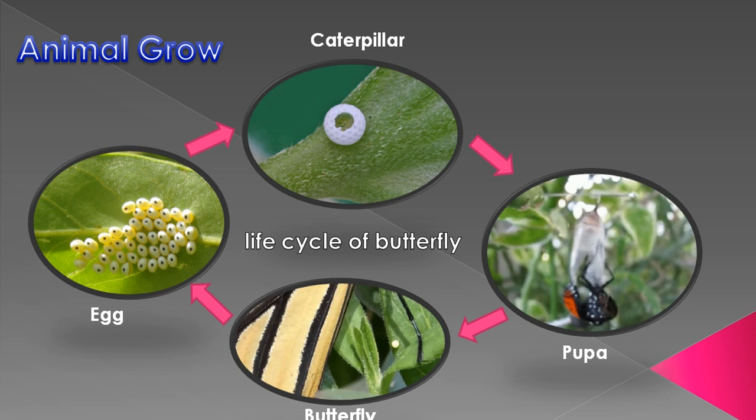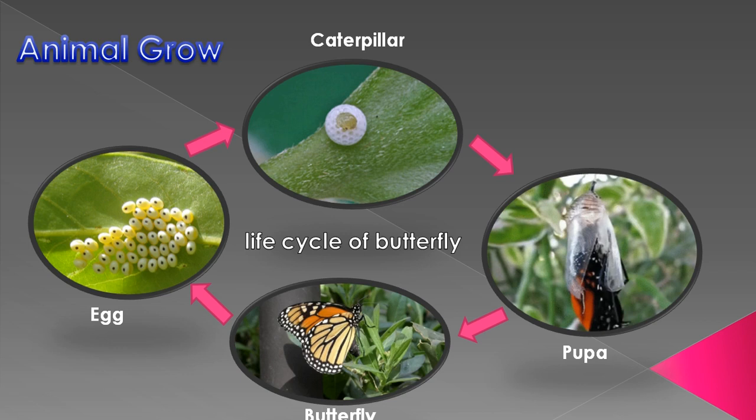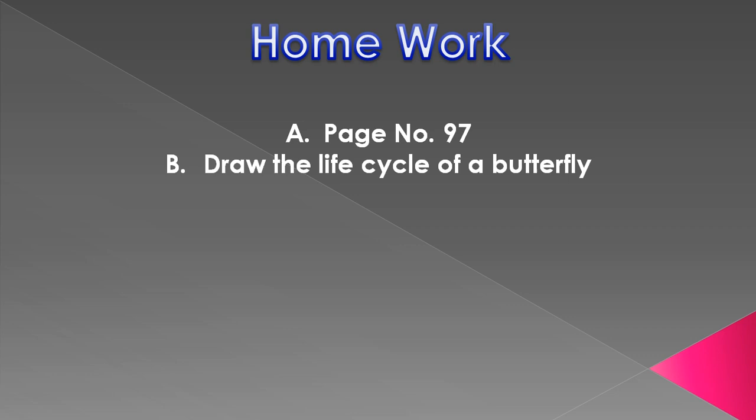This is your homework: on page 97, some pictures of animals are given. Read the clues related to them and circle their names in the word grid. The second task is to draw the life cycle of the butterfly in your copy. After finishing, send it to my personal number. Goodbye students, have a nice day, thank you.